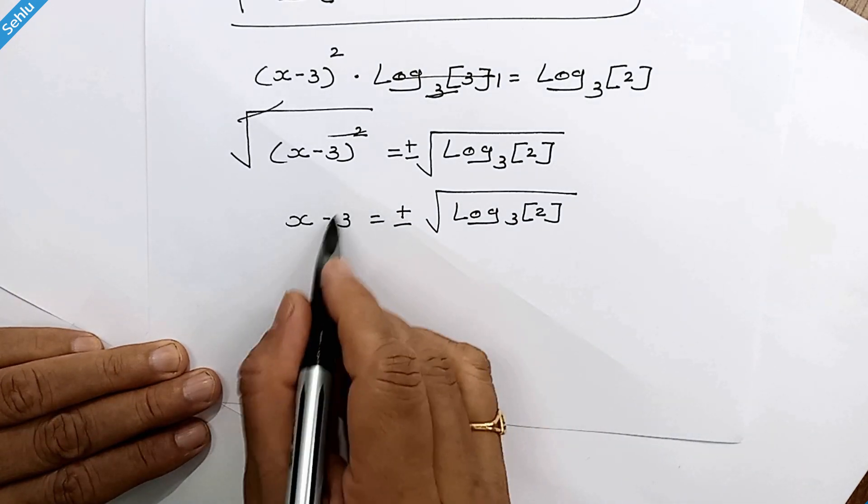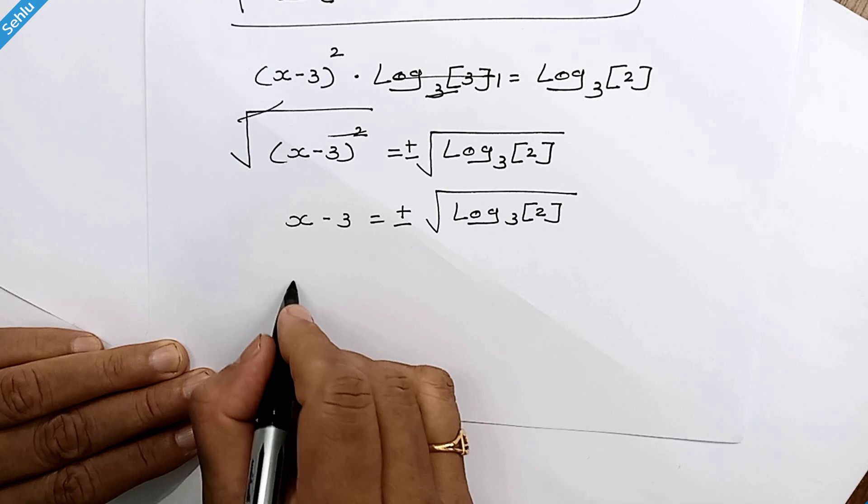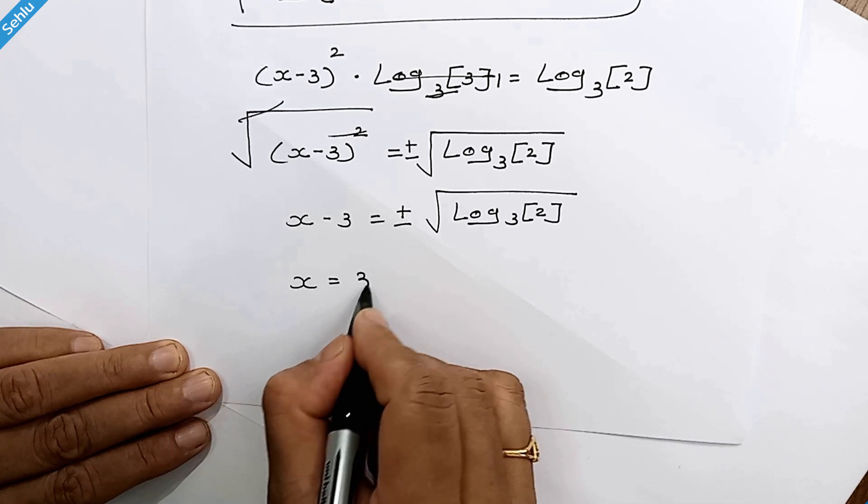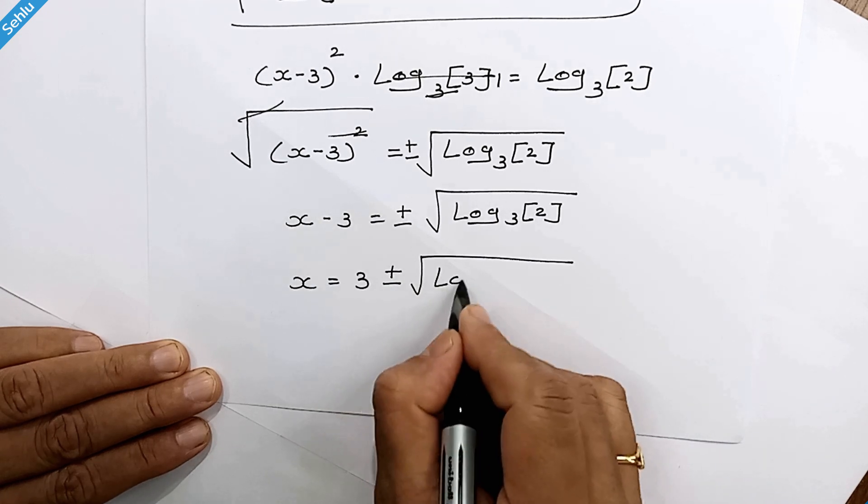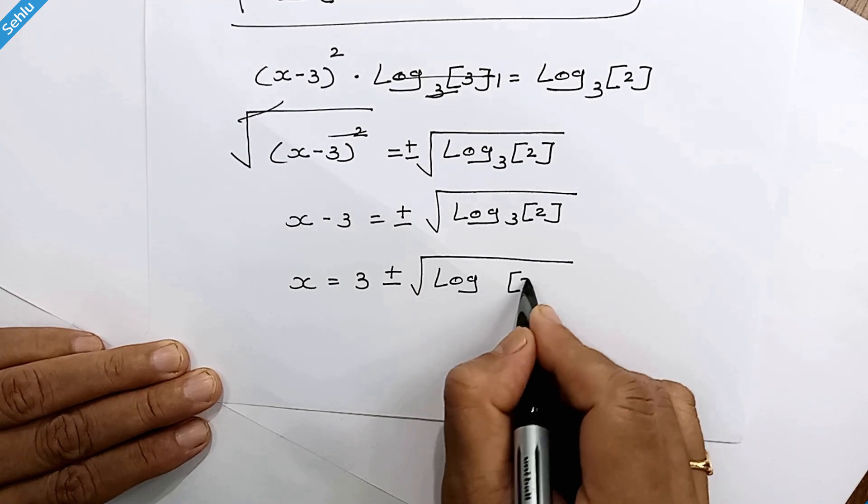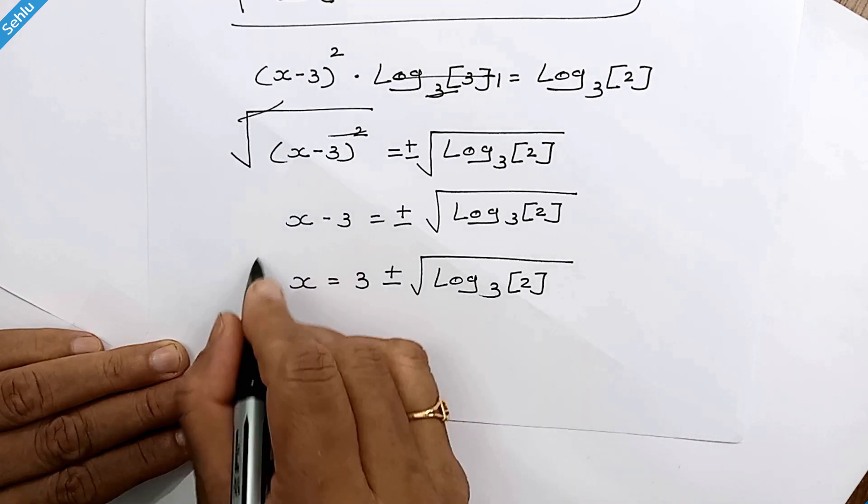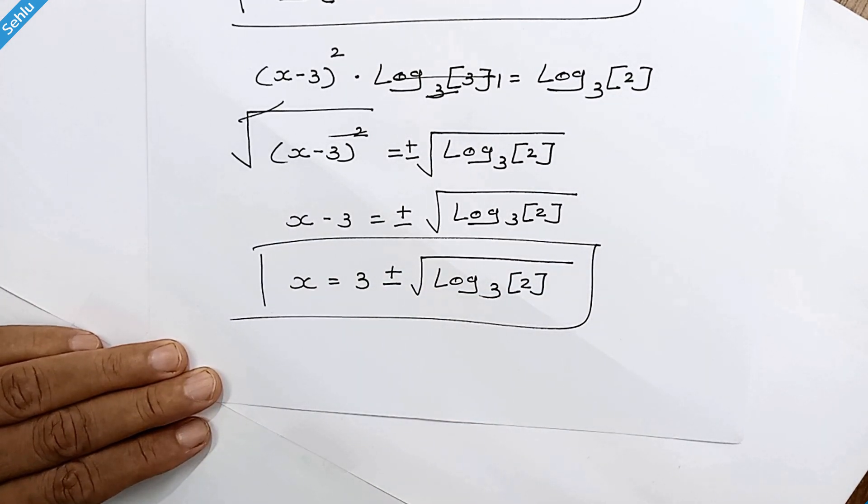And in the next step, we will move this 3 here. So it will be x equals 3 plus or minus square root of log base 3 of 2. And this is the answer. Thanks for joining. Bye-bye.